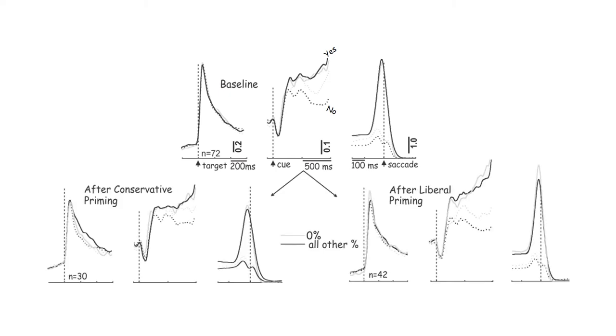When primed to be more conservative, this activity difference decreased. When primed to be more liberal, the activity difference increased.